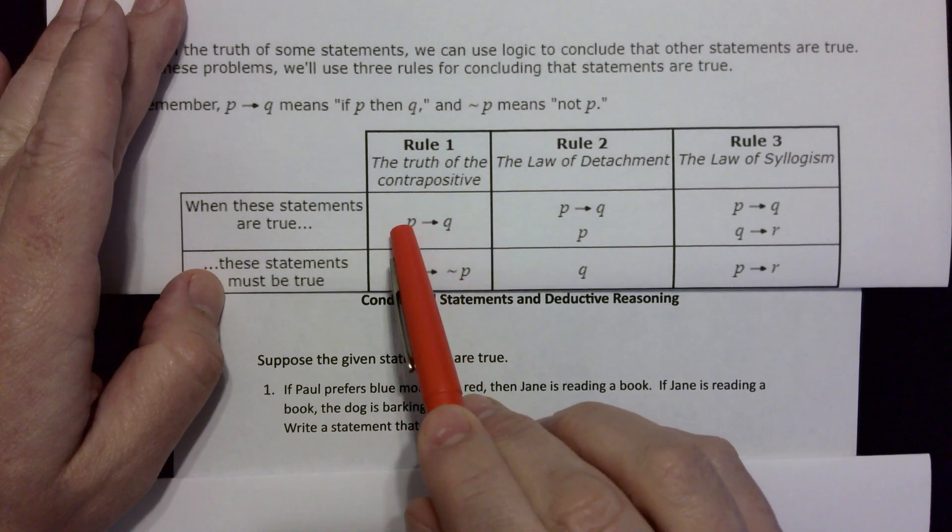Next: if the apples are moldy, then Angel knows how to dance — if P then Q. We're also given that the apples are moldy, so P is true. Since P is true, Q must be true as well. Therefore, Angel knows how to dance. That uses the law of detachment, rule number two.